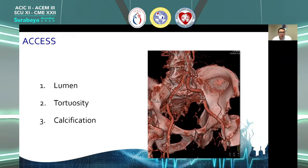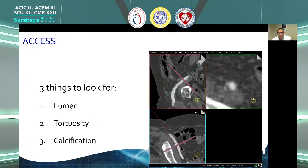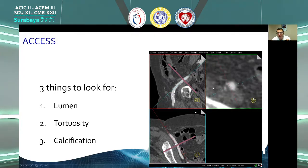Beyond the aortic root and heart — the first and most decisive step — we look at access information: whether vessels are large enough in lumen size, whether they are tortuous or very tortuous, and whether there are calcifications. These are the three main things we assess. For lumen, we need to know if vessels can accommodate the interventional material, which requires perpendicular cross-sections on the vessel to avoid overestimating size and then measuring the minimum luminal diameter.